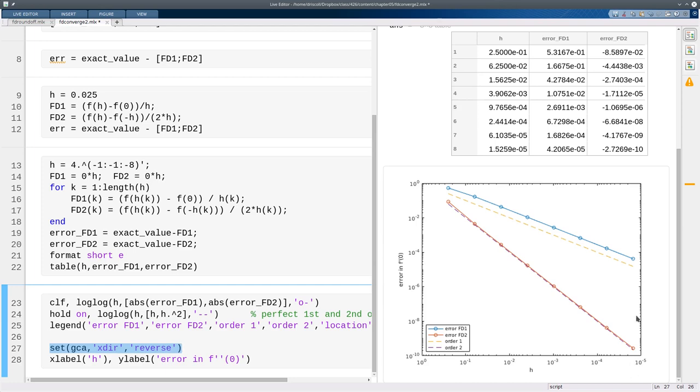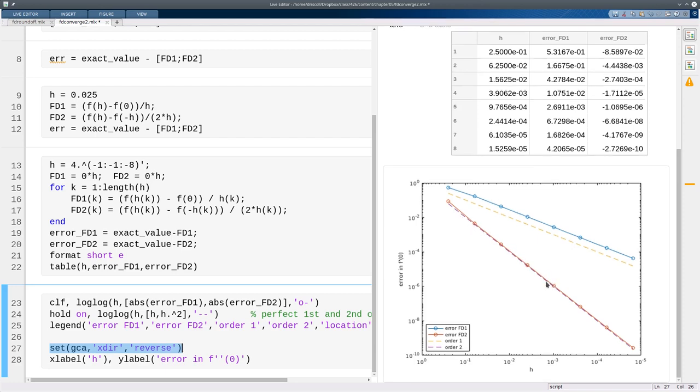So that's the way this graph is set up, and the blue curve is the errors of the first order method, with the yellow line being perfect first order convergence. This is a line of slope negative one. The red graph is the second order errors, and the purple line is perfect second order convergence. That's the line of slope negative two.